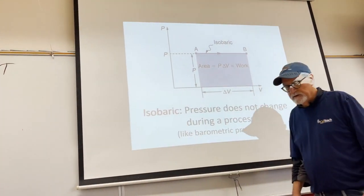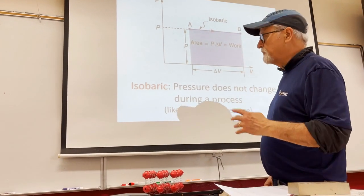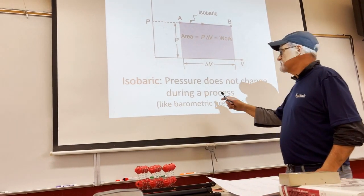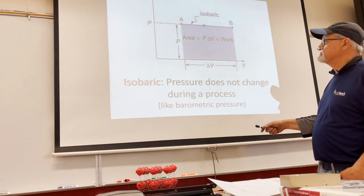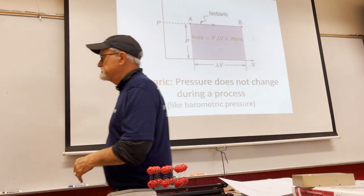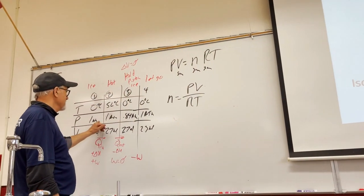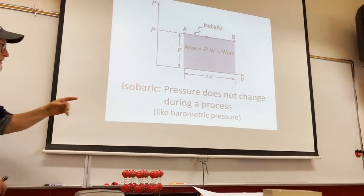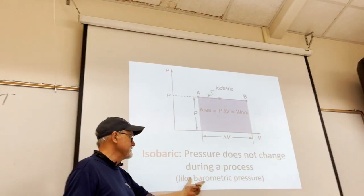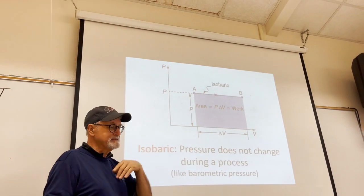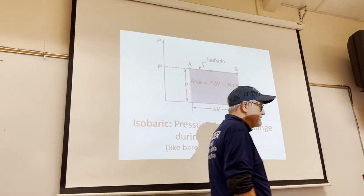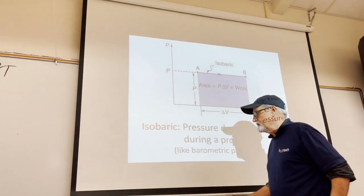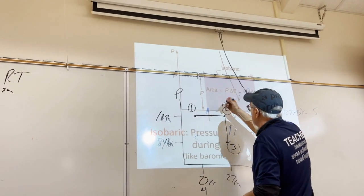On PV diagrams there are four types of processes. Isobaric means pressure doesn't change — 'iso' means the same, 'baric' relates to barometric pressure. We had an isobaric process in process A, going from state one to state two.